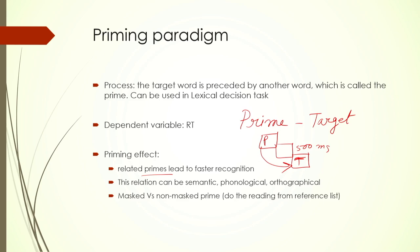The prime and target could be connected in terms of semantics. For example, if the prime is 'tiger' and the target is 'leopard', they are connected — part of the same family of animals. But if the prime is 'tree' and the target is 'pasta', there is no connection. Depending on this difference, we will have different reaction times. The relationship can be semantic, phonological, or orthographic. If there is a relationship between prime and target, there will be faster recognition; if no relationship, it will not help.